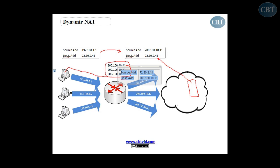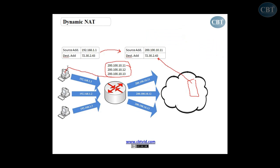When a second computer refers to the router and wants to send the packet out, again the router will check this pool and assigns another address to that computer. For the third computer, I have a pool of three addresses. When the third computer comes, again the router looks at the pool, picks one address, assigns it to that computer as a source address and sends the packet out. When the packet comes back, again the same story — the address will be changed by the router when it looks at the NAT table.